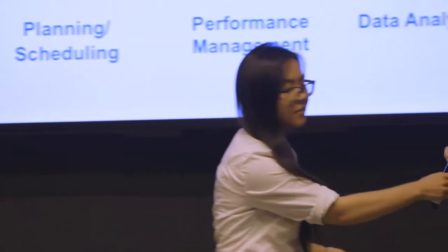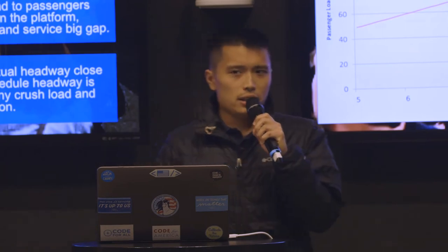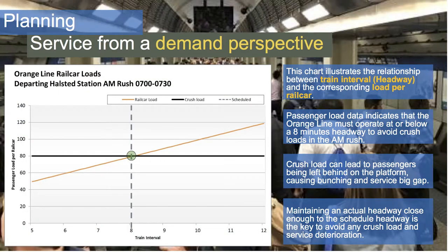Good evening everyone. My job is to make train schedules and tonight I'm going to talk about how we use a data-driven approach to achieve what we try to accomplish. In general, our planning department's mission is to encourage ridership growth by providing quality service while operating on budget. There are two perspectives: the service demand perspective and the budget perspective. This graph illustrates the relationship between how often we run the train versus the number of customers per rail car — this is an example for the orange line in the AM peak service.